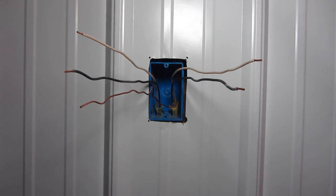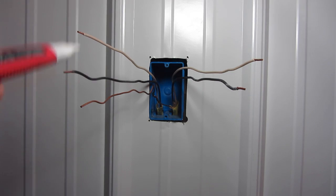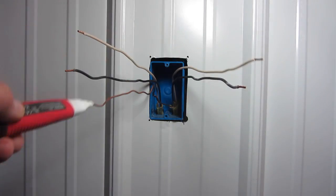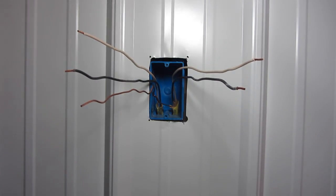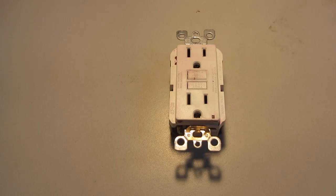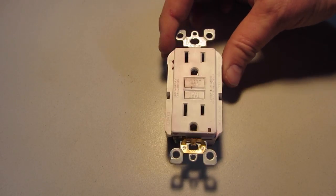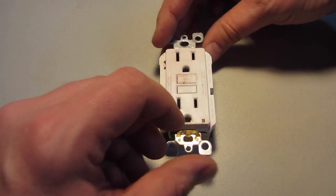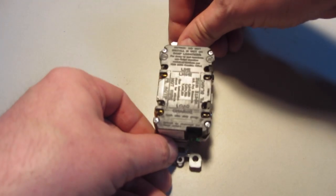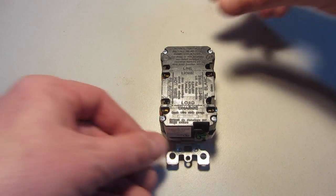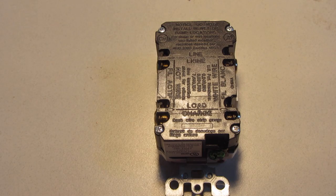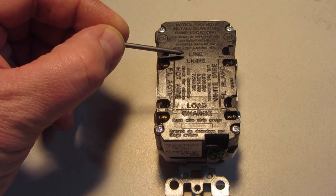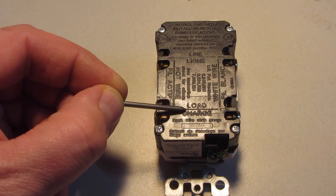The power should be off now. I am going to test one more time to make sure. Now take the GFCI outlet and turn it over. On the back side, you will see where it says line and load.